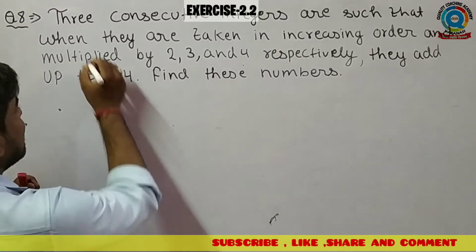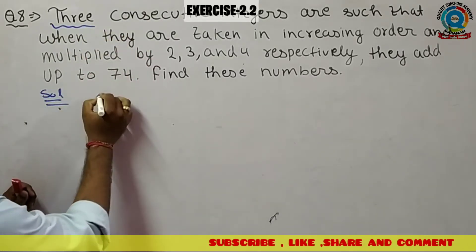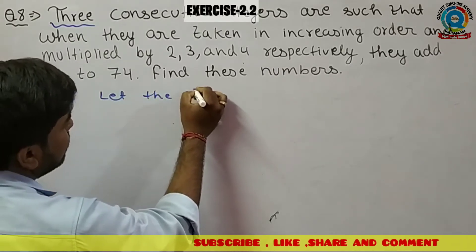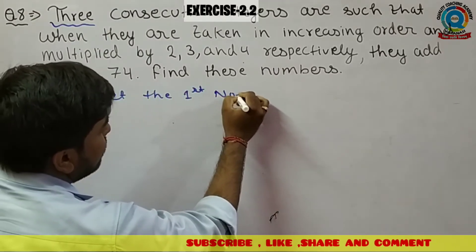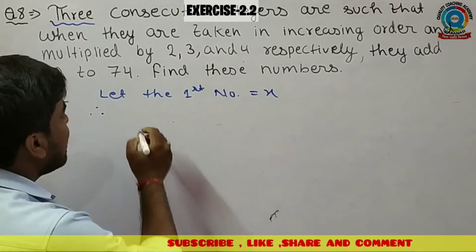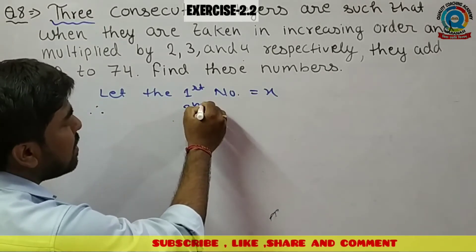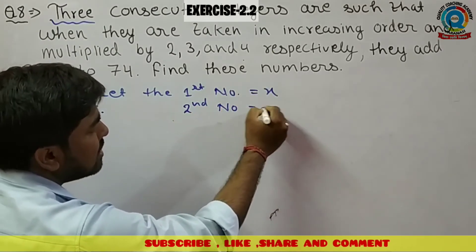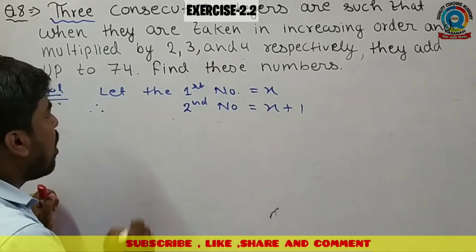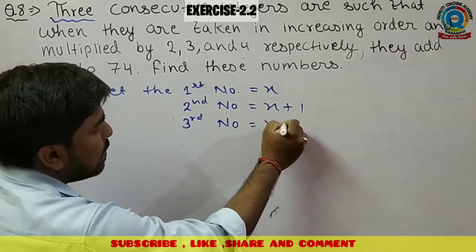Tau aise question me, pahle let karte hai. Let the first number is x. Agar first number x hai, tau second number kya ho jaye ga? That's x plus one, kyunki ye consecutive integer hai. Third number kya ho jaye ga? Third number ho jaye ga x plus 2.